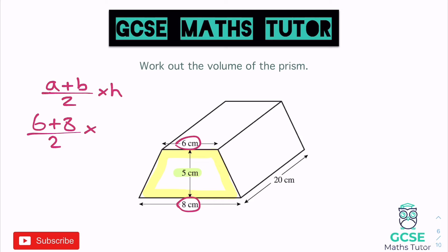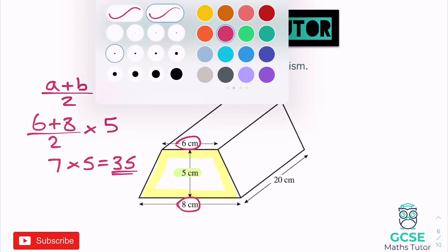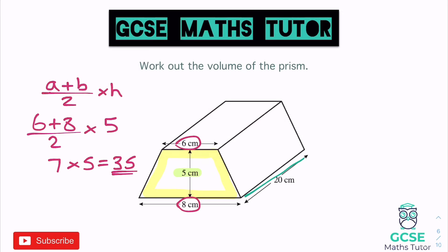Working this out: 6 plus 8 is 14, divided by 2 is 7, then 7 times 5 gives us an area of the trapezium of 35 — centimetres squared. Now we work out the volume: the shape goes back 20 centimetres, so we take our cross-section area of 35 and multiply by 20. 2 times 35 is 70, add on the zero and we get 700 centimetres cubed as our final answer.